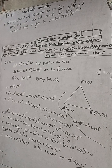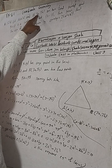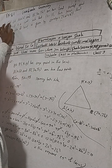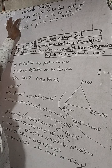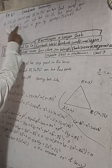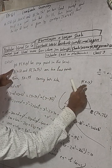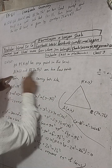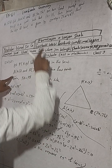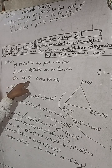For those who want a Nepali explanation, just comment below. Let me explain briefly: let P(x, y) be any point in the locus, and A and B are the two fixed points. We have the condition that PA equals PB.